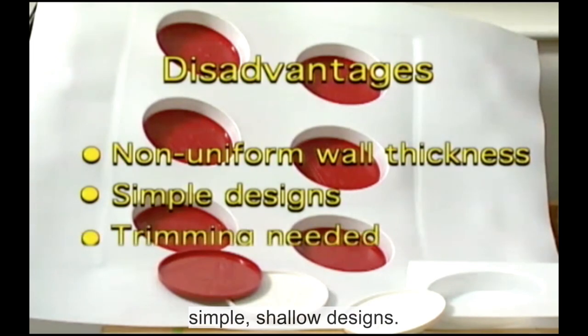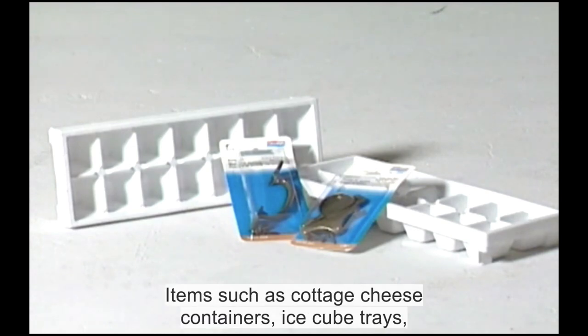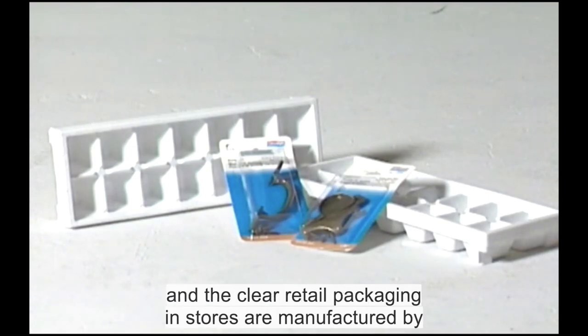Straight vacuum forming is limited to simple, shallow designs. Also pieces must usually be trimmed. Items such as cottage cheese containers, ice cube trays and the clear retail packaging in stores are manufactured by thermoforming.